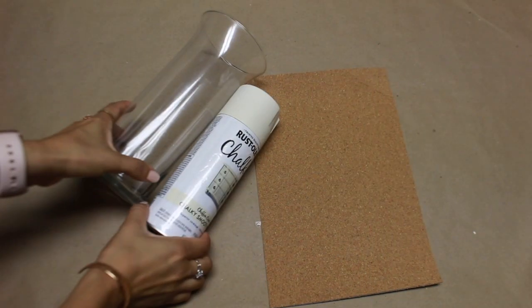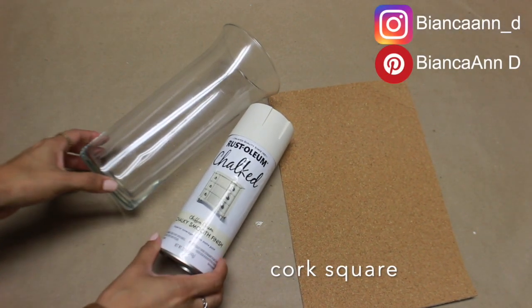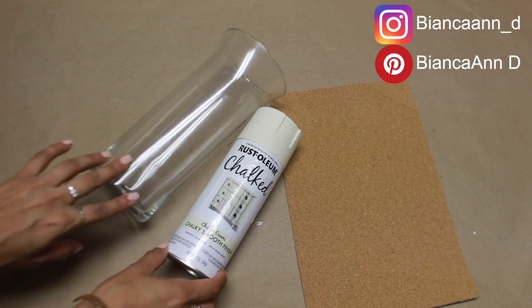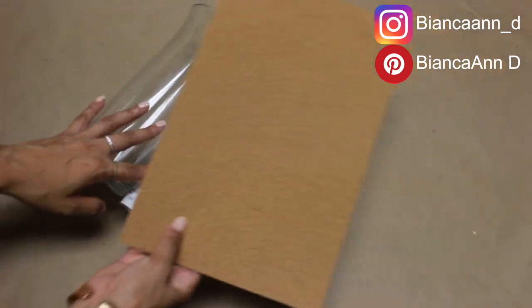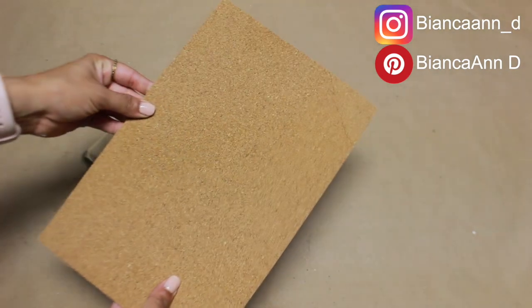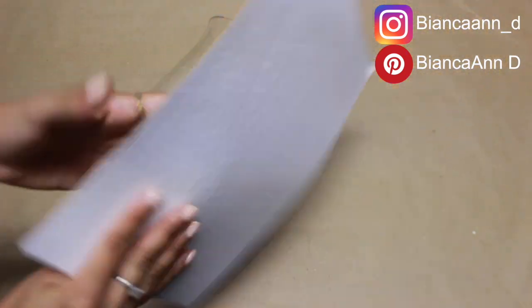For DIY number one, we are using this piece of cork and vase from Dollar Tree. I have been trying to figure out something to do with this piece of cork and it comes just like this from there. I just love the texture so I figured I could do something with it.